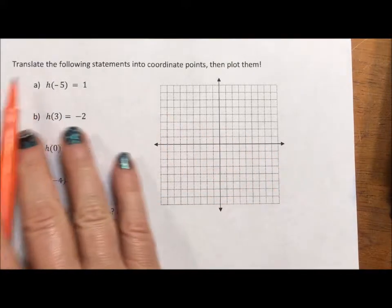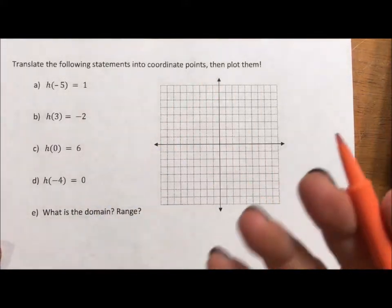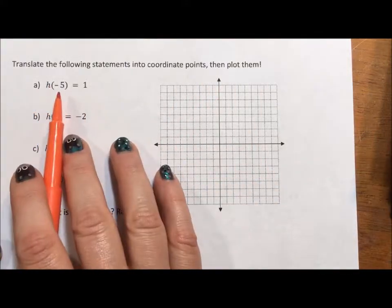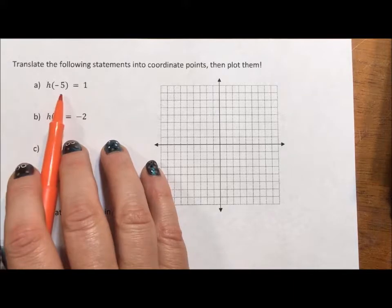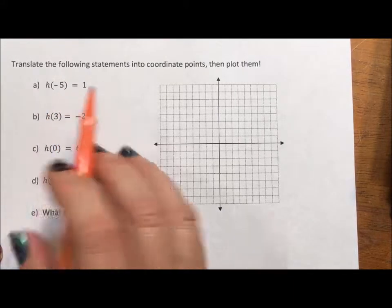In this first one, it says translate the following statements into coordinates, then plot them. Okay, so the thing I like about function notation, it looks like multiplication, it isn't. It's just telling us our input and our output.